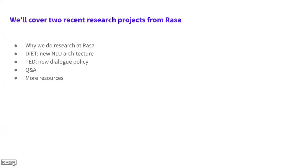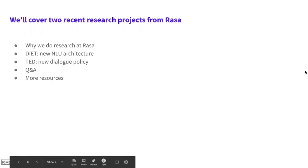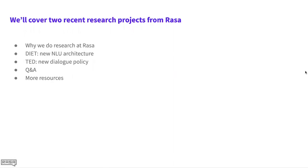So just a quick outline of what we'll talk about today. I'll start with a couple of words about why we actually do research in the first place — why is it something we even bother with at Rasa? Then there are two topics: one is DIET, which is our new NLU architecture, and I'll mostly talk about results and what we need from the community. Then I'll talk about TED, our new dialogue policy. The common thread between these two is the use of transformer architectures. We'll also take questions and I'll leave you with resources for further reading.